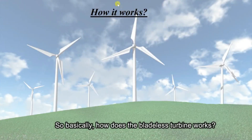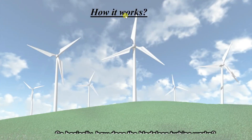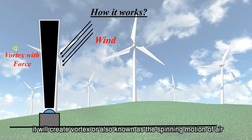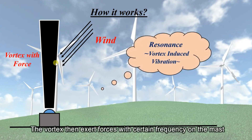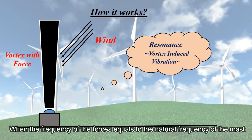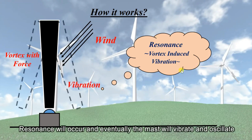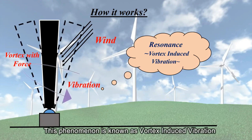So basically, how does the bladeless turbine work? Firstly, when the wind strikes or passes the mass of the bladeless turbine, it will create a vortex, also known as the spinning motion of air. The vortex then exerts forces with a certain frequency on the mass. When the frequency of the forces equals the natural frequency of the mass, resonance will occur and eventually the mass will vibrate and oscillate. This phenomenon is known as vortex-induced vibration.